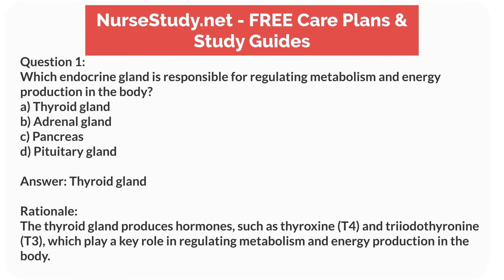Answer: A. Thyroid gland. Rationale: The thyroid gland produces hormones such as thyroxine (T4) and triiodothyronine (T3), which play a key role in regulating metabolism and energy production in the body.